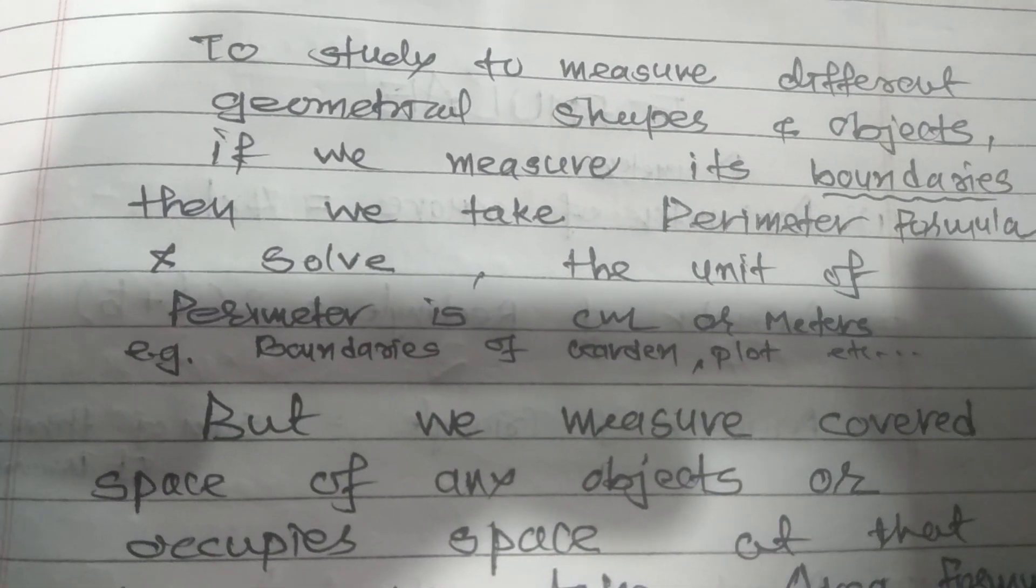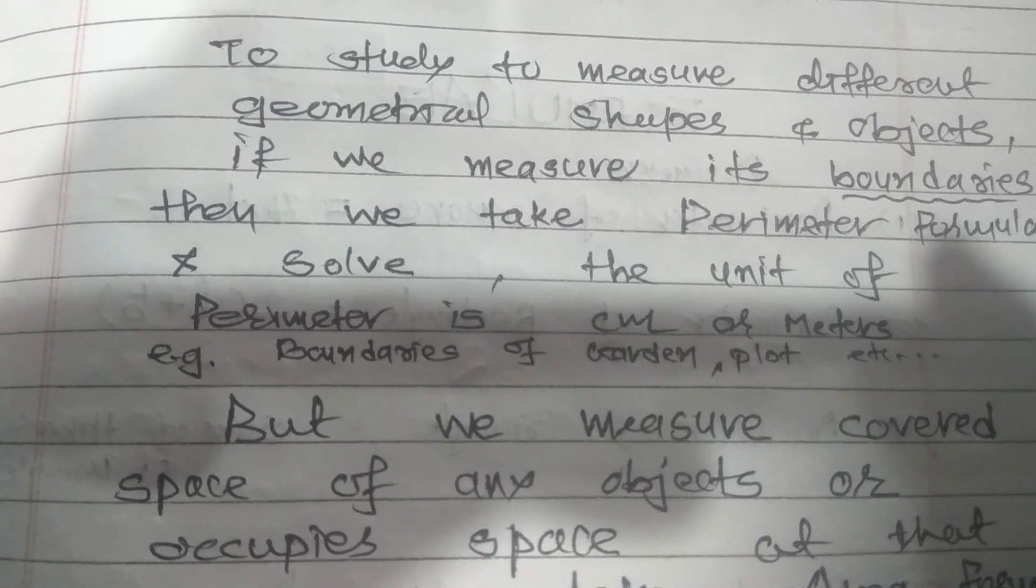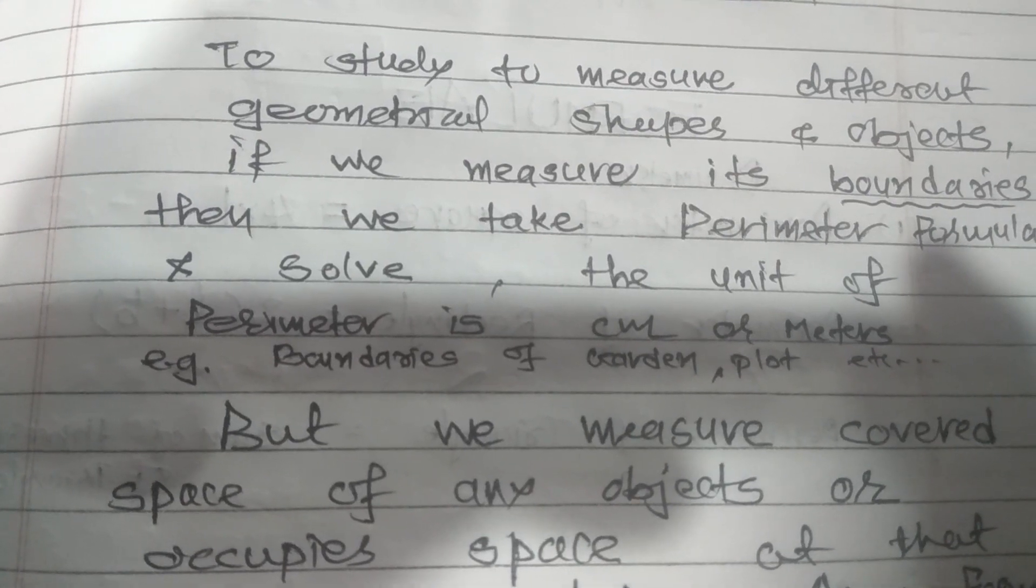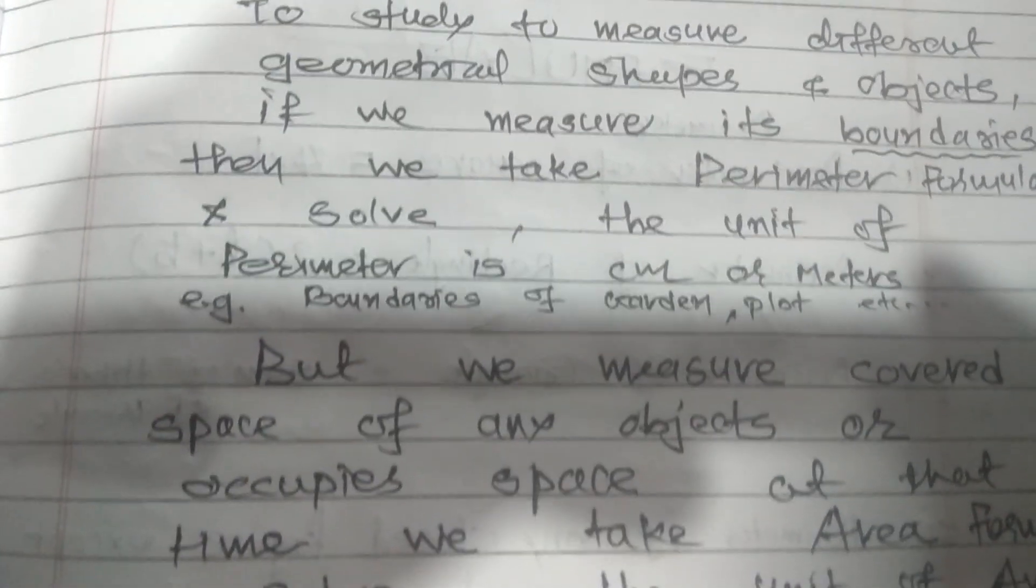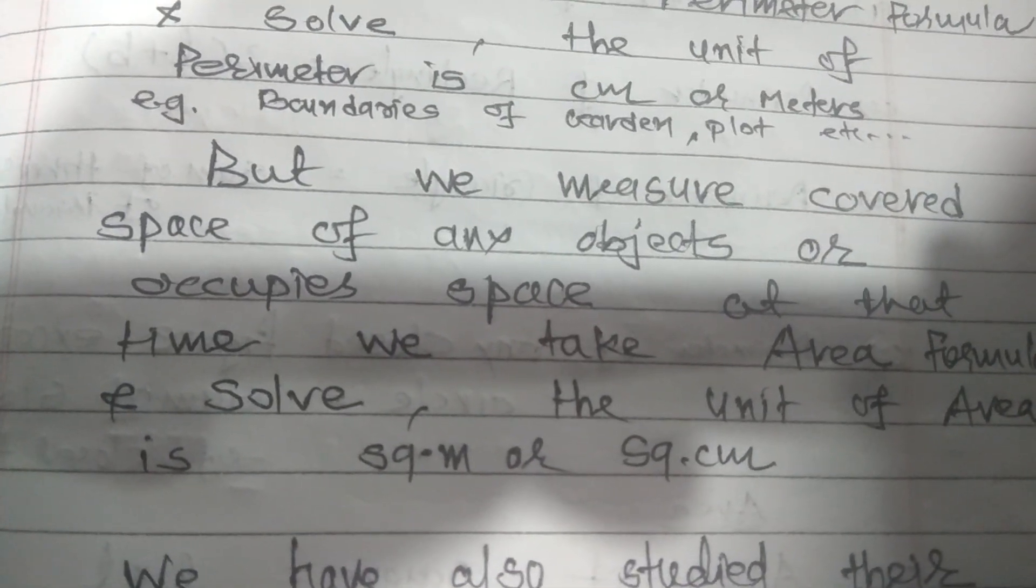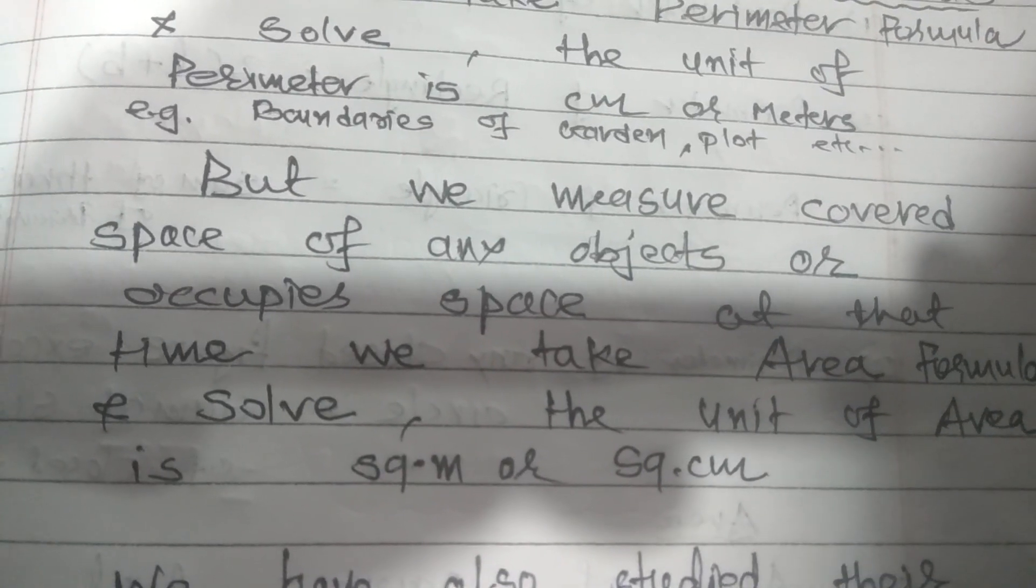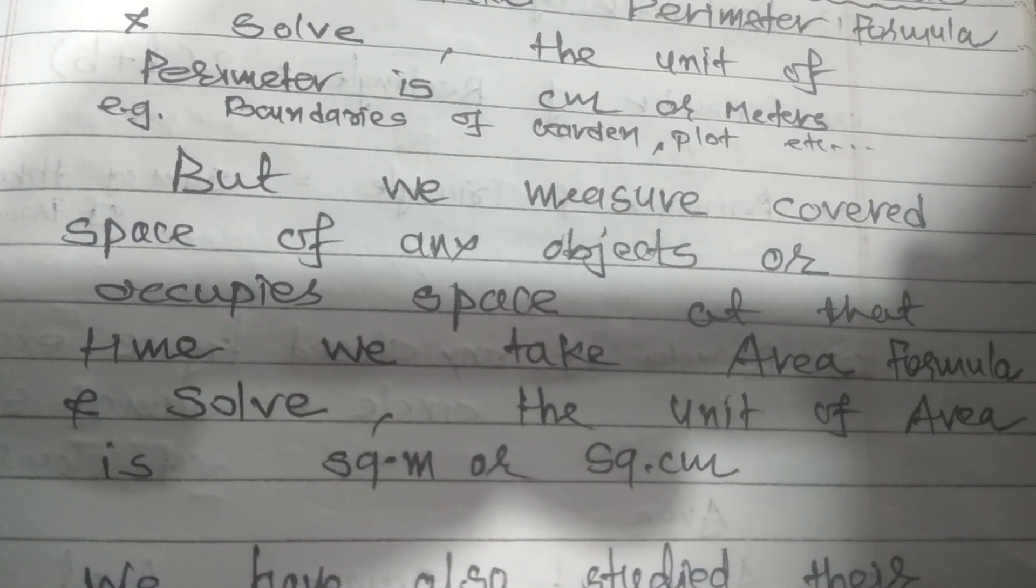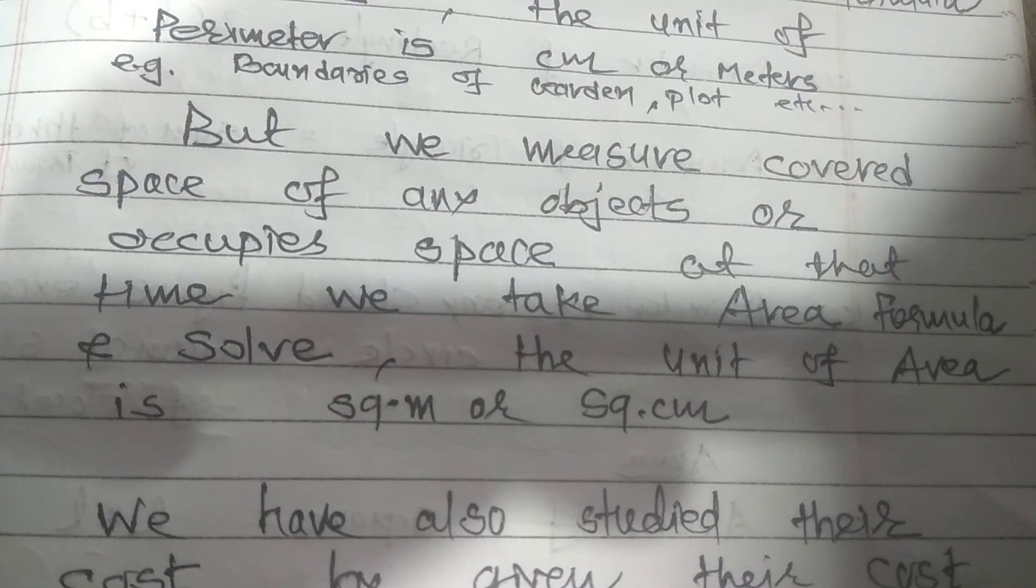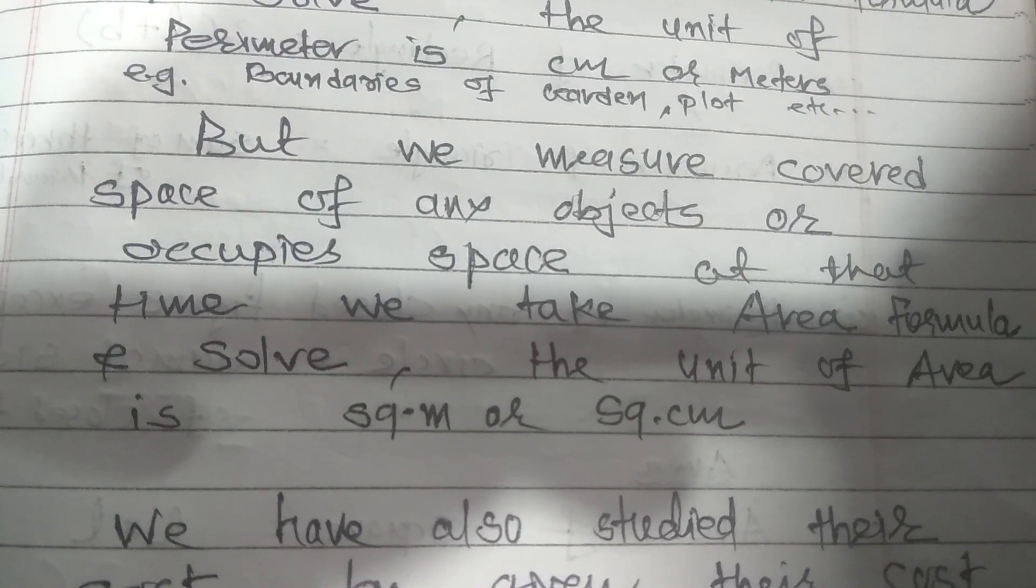And the unit of that perimeter we have written is centimeter or meter. Say for example, if we want to find out the boundaries of a garden or plot, we find perimeter. But when we measure the space of any objects or occupied space, at that time we take area formula and solve. And the unit of area is square meter, SQ means square, square meter or square centimeter.